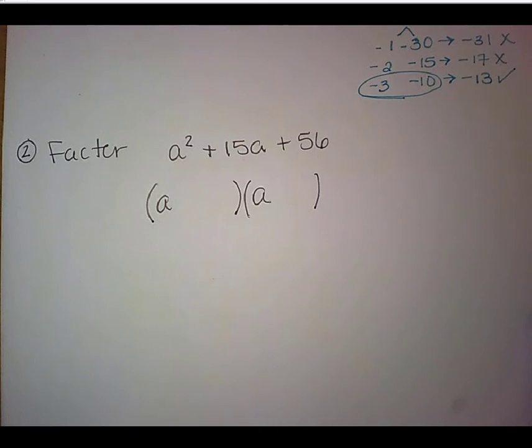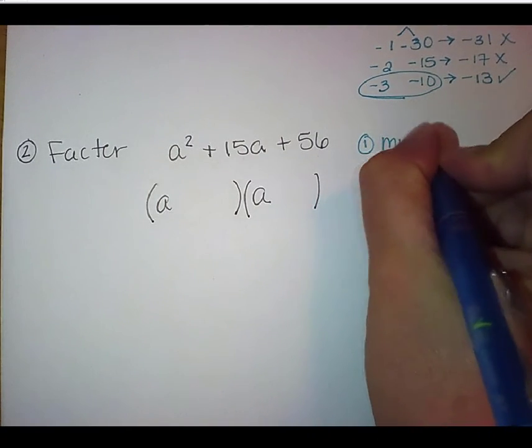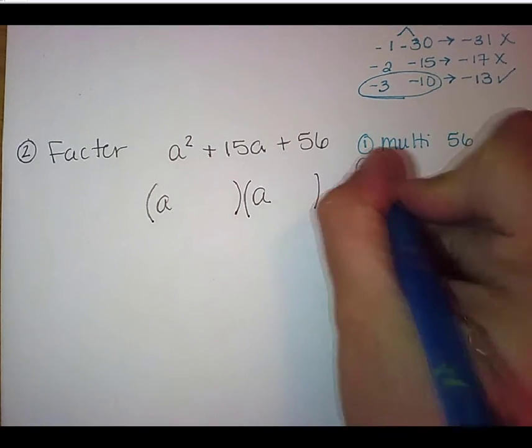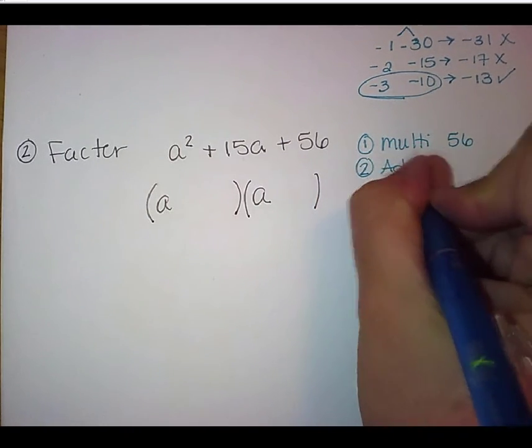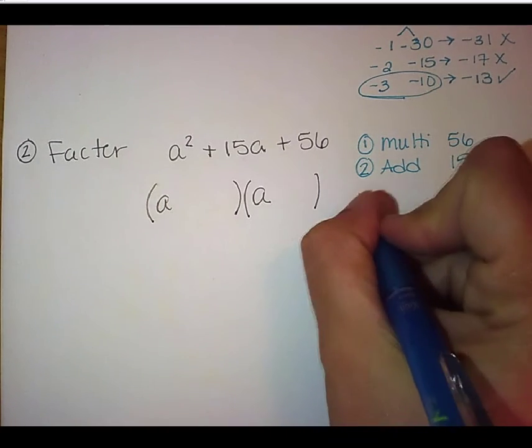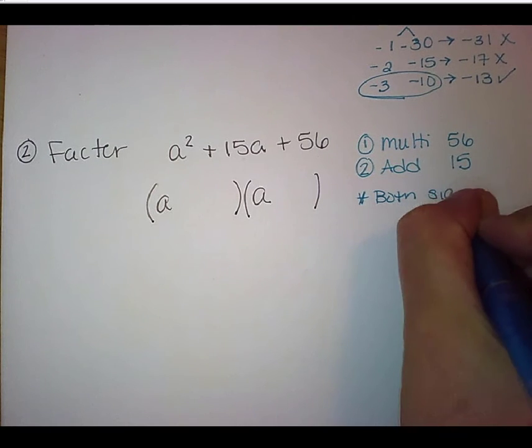Let's talk about what we're trying to look for here. So we want two numbers that multiply to a positive 56 and they also add to a positive 15. Again, remember, these signs are telling us stuff. So since this is positive, we know that they're the same sign. We look to our addition to tell us what sign that is. And in this case, it's positive. So we know that both signs are positive.